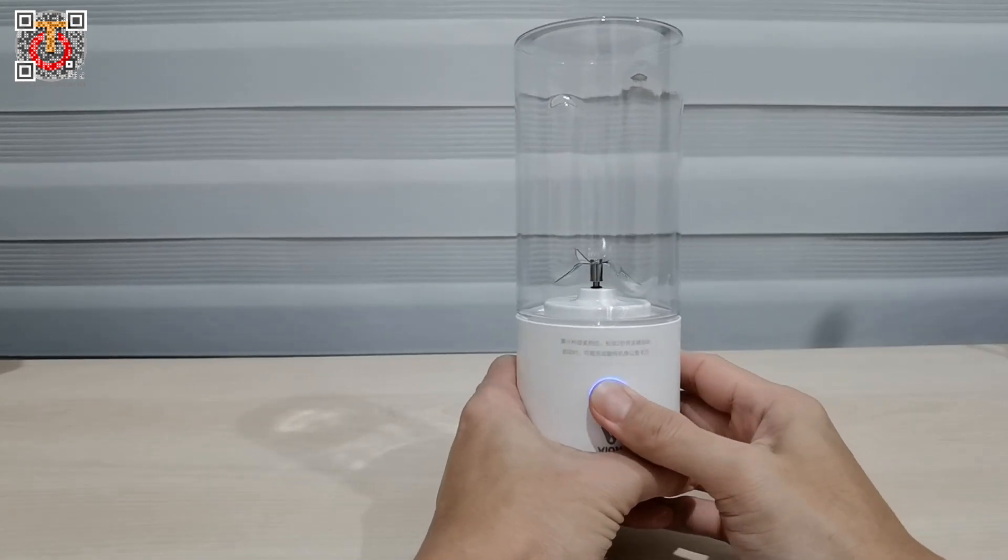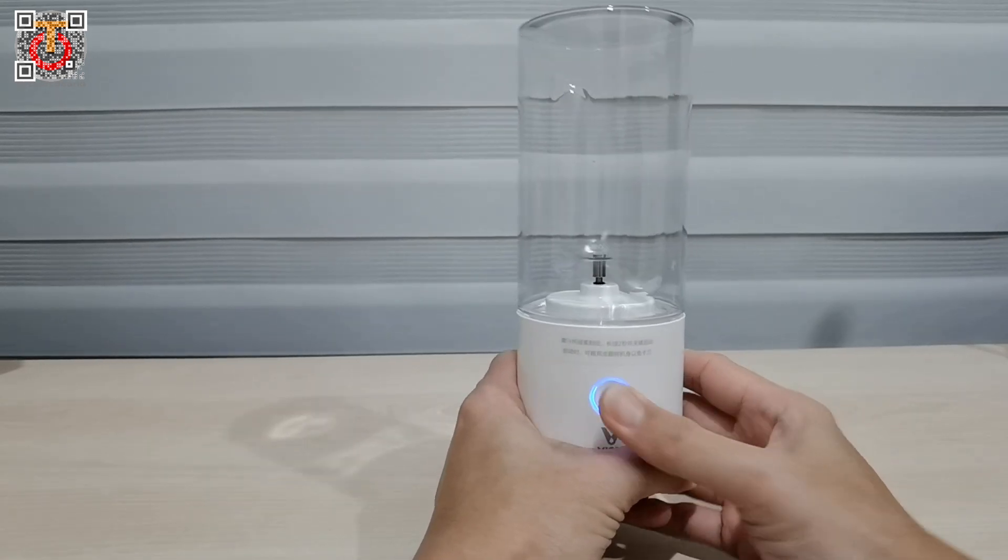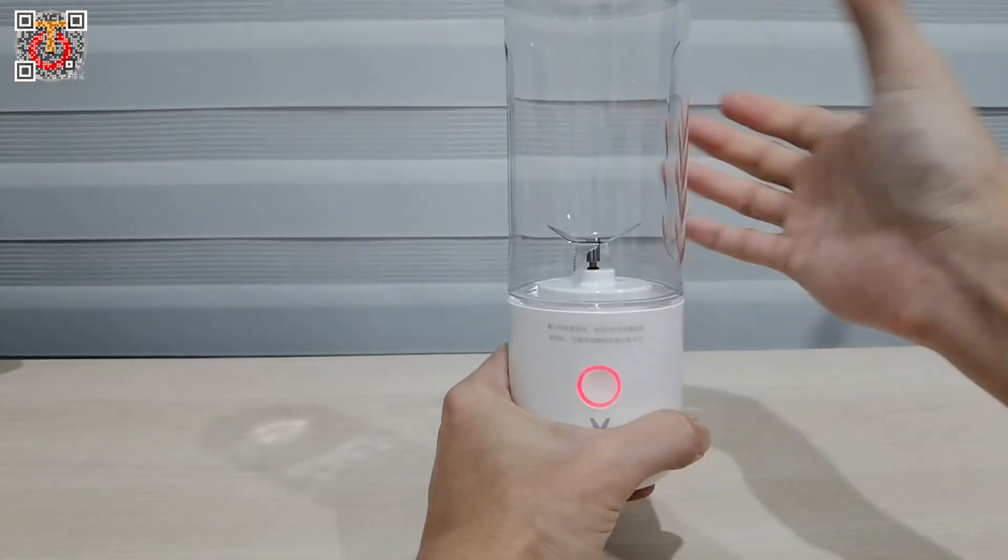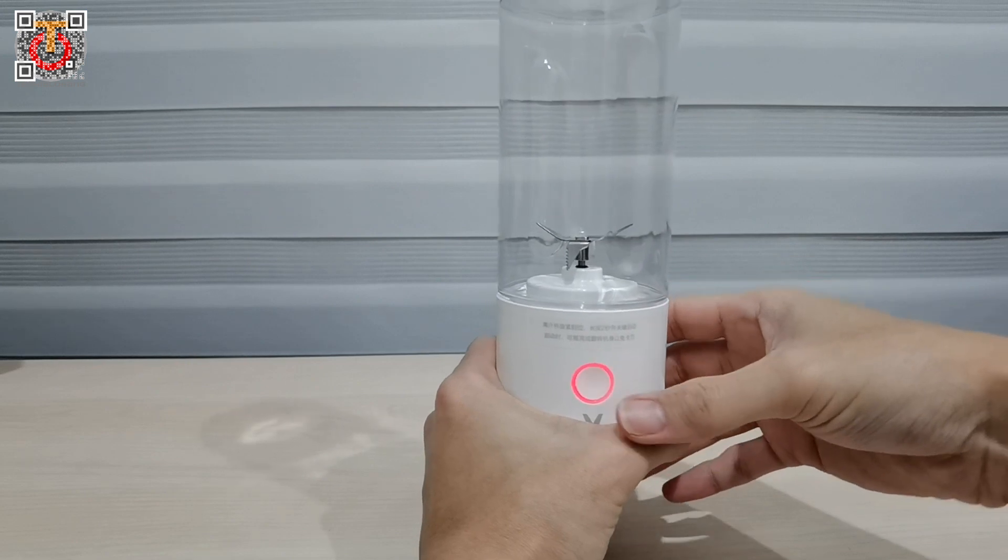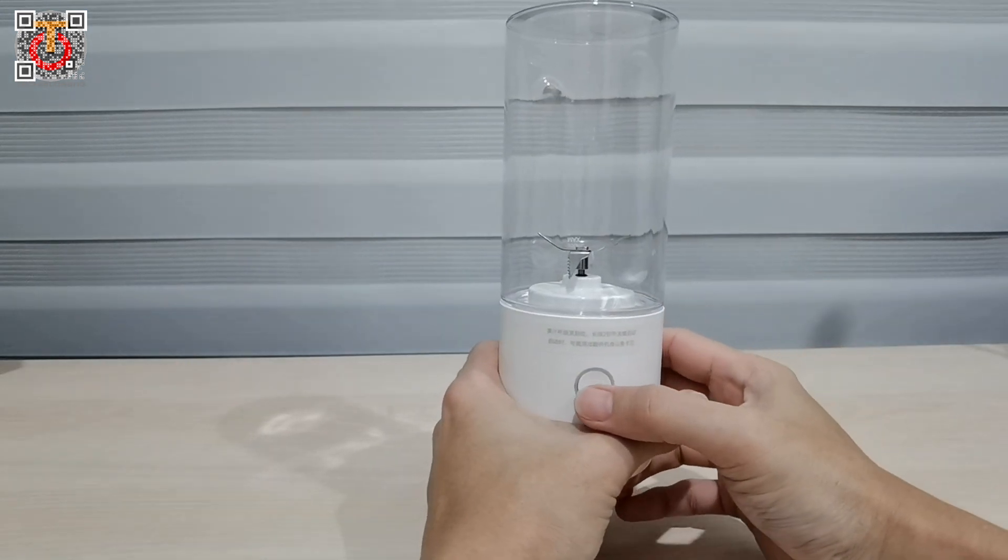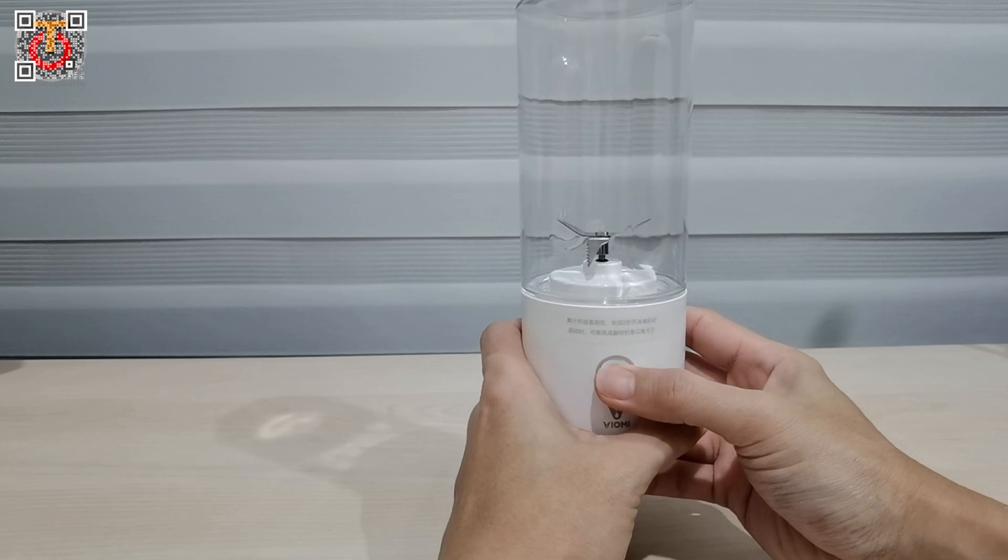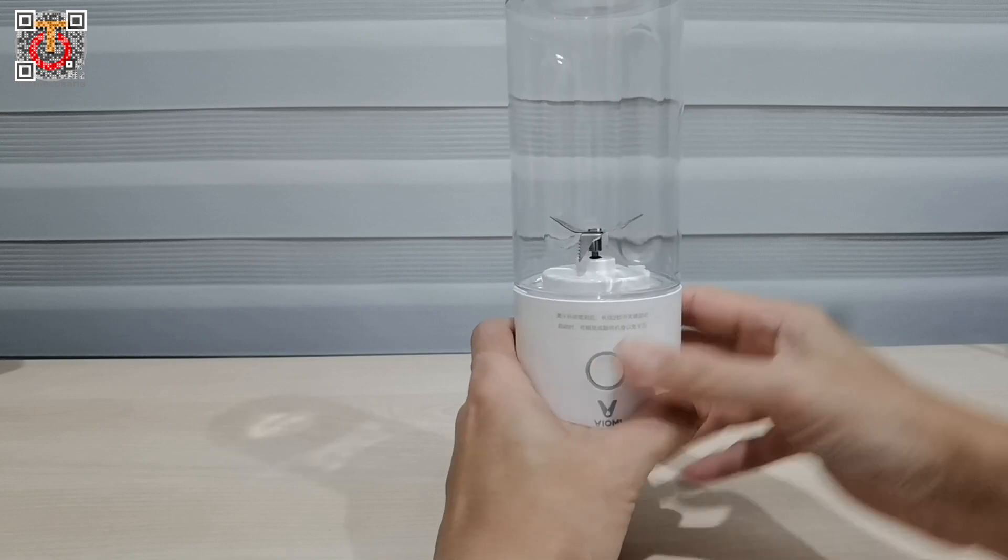One thing I want to try is to see whether the safety feature really works as advertised or not. So let's start this spinning and I try to open it midway. You see, it stops. So there's actually a sensor to detect that I did not put in the container properly and it will stop.